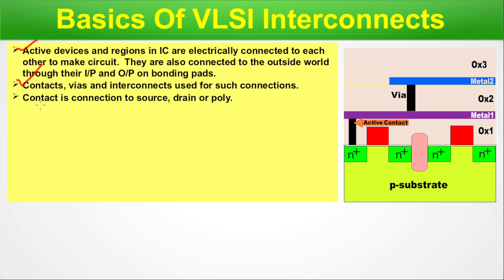A contact is a connection to source, drain, and poly. This is the source-to-drain region, this is the channel region, and this is the contact to the active region. This is the gate region. When the electrical connections are directly to the active region like source, drain, or poly, we call this a contact.